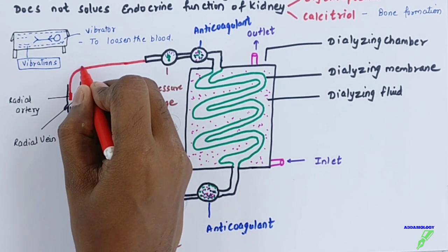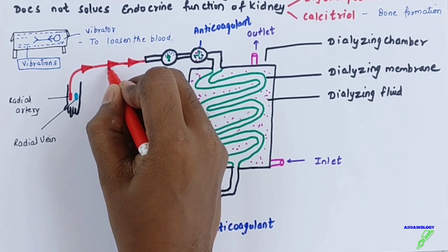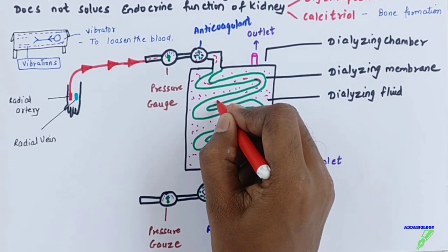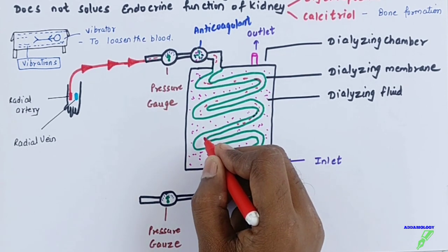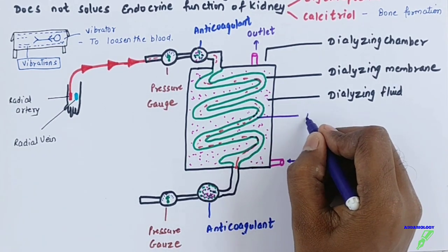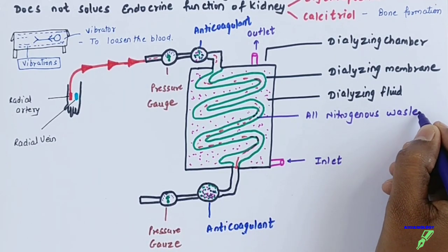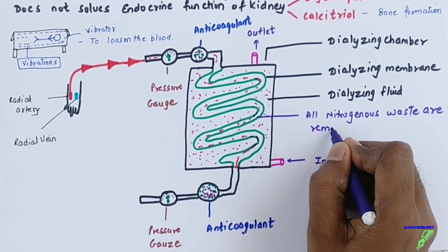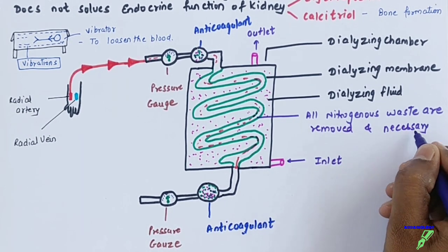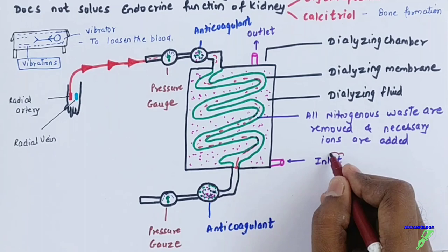The blood is drawn by the radial artery and travels through the dialysis machine. First, the pressure gauge maintains the pressure, then anti-coagulant is added, and then as the blood travels through the dialyzing membrane, all nitrogenous waste — ammonia, urea, uric acid — is removed, and essential ions and salts are added back into the blood.